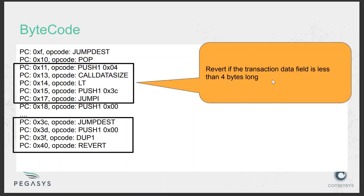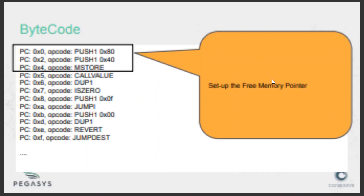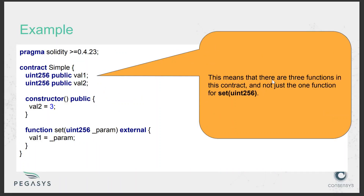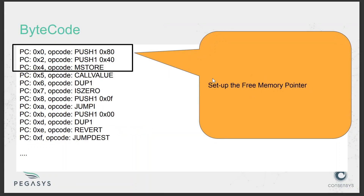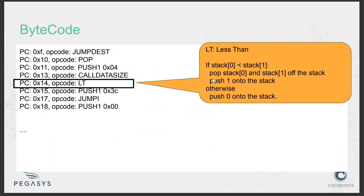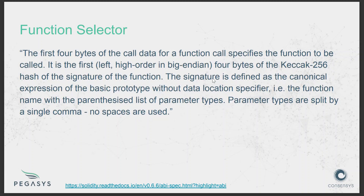Let's talk about how the EVM interprets a function call. When you call a function on a smart contract, the EVM needs to know which particular function you are calling and how to execute that logic. This is done through the function selector.